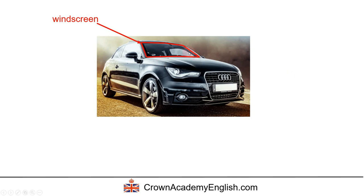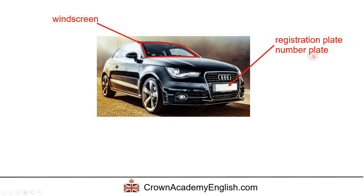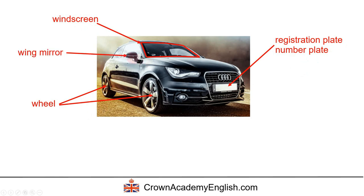So in red, this is the windscreen. This is the registration plate, also called the number plate. And these are the wheels. And this is called a wing mirror.